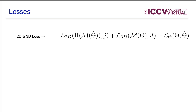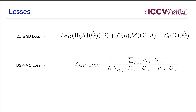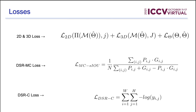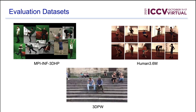The L2D and L3D losses minimize the joint loss, and the L-theta minimizes the squared error loss of SMPL parameters. For DSRMC, we use the standard soft IOU loss. For the DSRC loss, we minimize the negative log of the output probability of the rendered vertex.